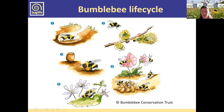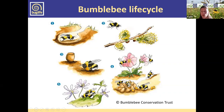The workers are basically the queen's daughters — they'll be smaller than the queen in most species, but in most cases they look the same, just a bit smaller. The workers' job is to go out and collect more pollen and nectar to bring back for the next batch of grubs, while the queen essentially stays in the nest and lays more eggs to increase the colony size. Workers also tend the nest and feed the new larvae as they emerge.